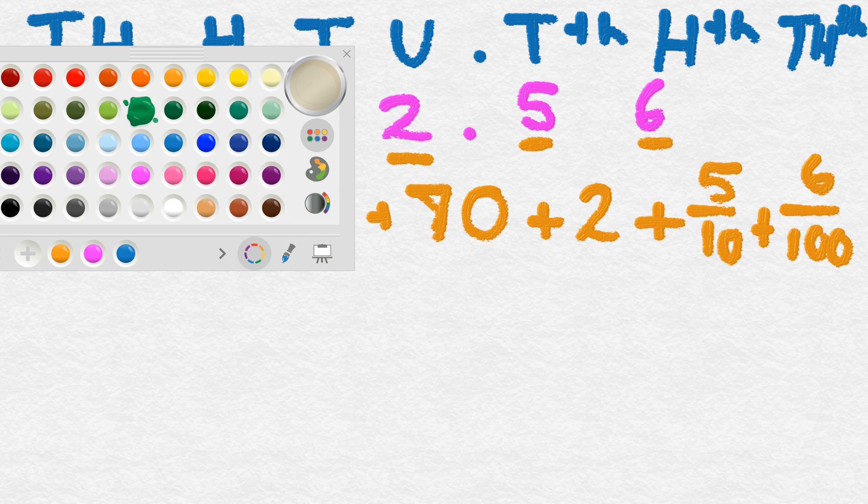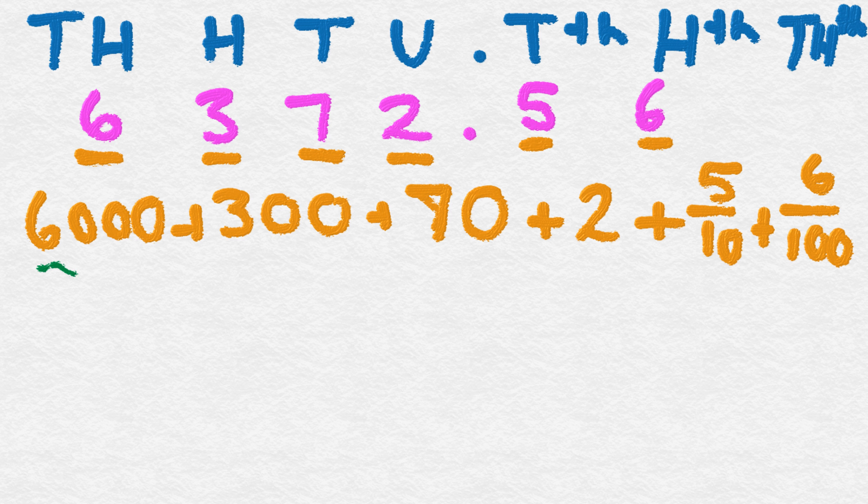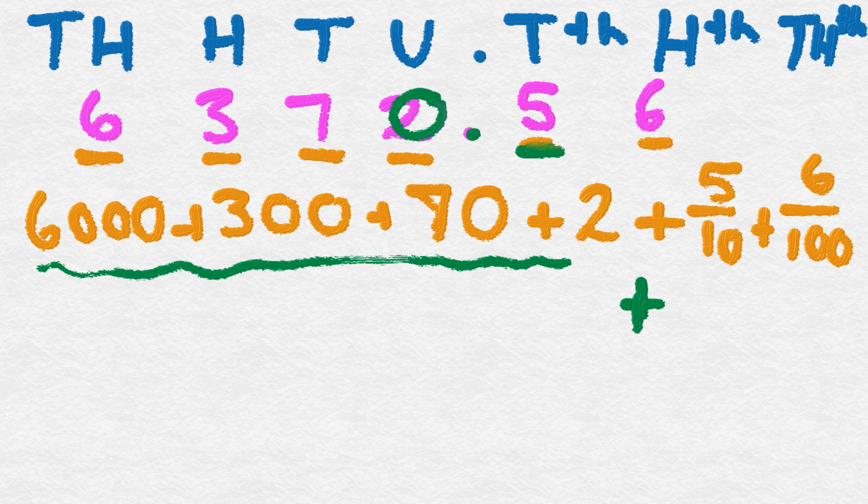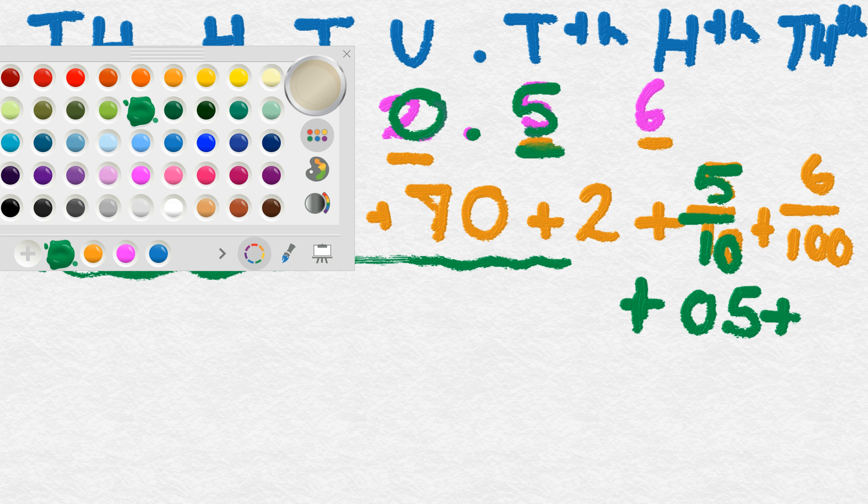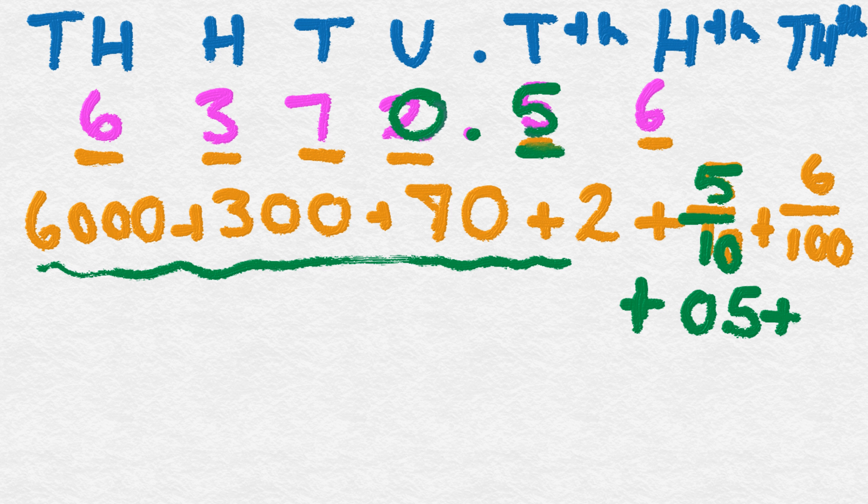Now we can also expand that using the decimals. So the first part here remains the same, but now we're going to plus, and we're going to focus on our tenths. So we put 0.5, which is equal to 5 tenths, plus, now we're going to focus on our hundredths here, so we've got 0.06.